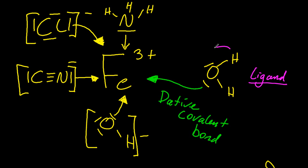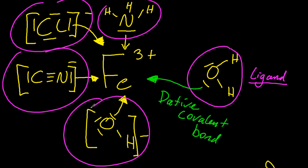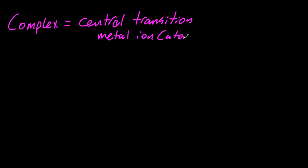Now what you've formed is a complex. Once you've added these ligands, they could all be different, they could all be the same, to this central transition metal ion. So that's what a complex is. It can be an atom, but it's normally an ion.